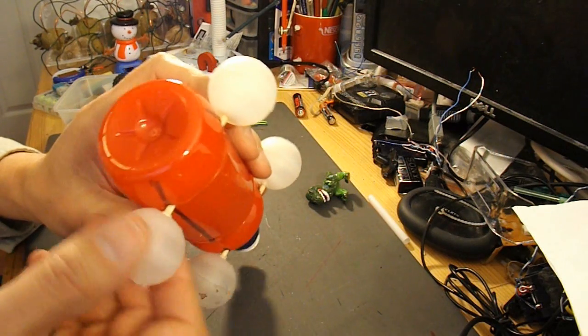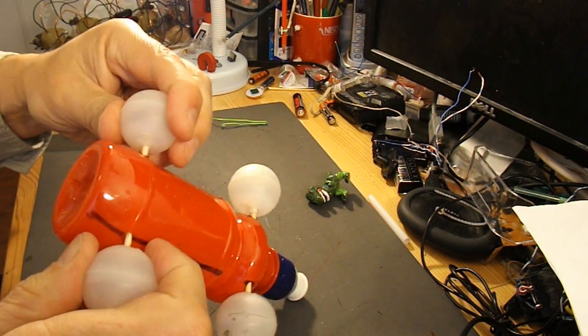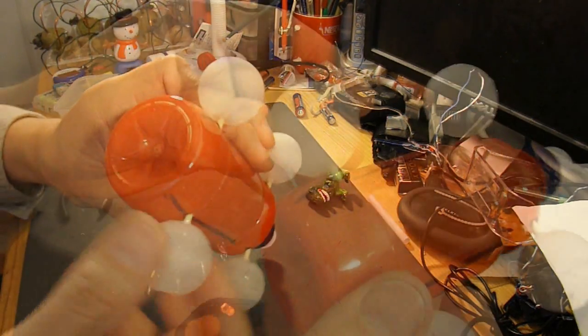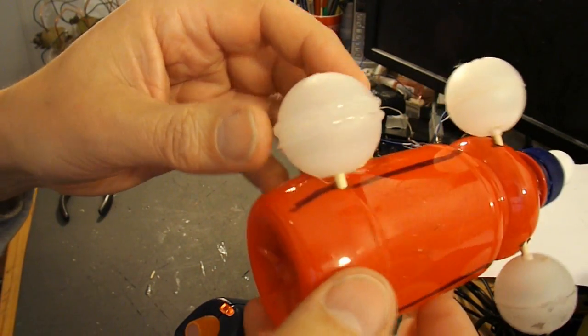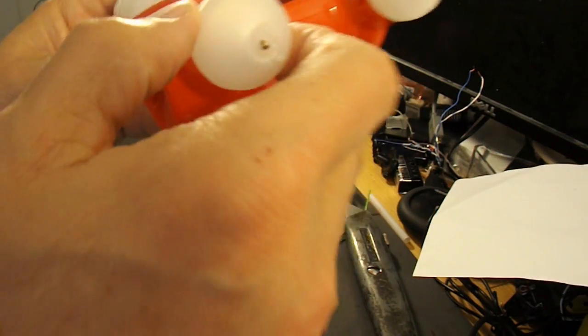So I'll get my hot glue gun out and see if we can get a bit of extra grip on the wheels. I'll put a double ridge of hot glue on that one and I'll do the same on this side.